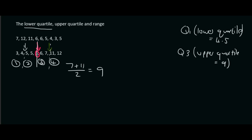The next thing I want to talk about is the range. Range is your highest value minus your lowest value. So the highest value is 12 and the lowest value is 3. So the range is going to be 12 minus 3, which is 9.